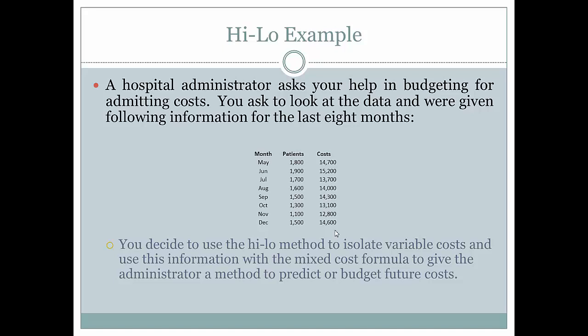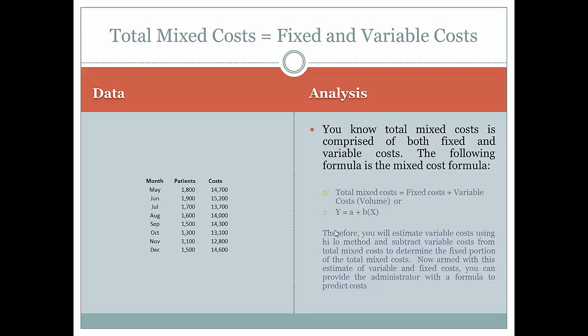It's a several-step method. Total mixed costs equal fixed and variable costs. We have our data on one side and our analysis on the other. You know total mixed cost is comprised of both fixed and variable costs, following the mixed cost formula: total mixed cost equals fixed cost plus variable cost per unit times the volume, or Y equals A plus BX. We will estimate variable costs using the high-low method formula, then subtract variable costs from the total mixed costs to determine the fixed portion.